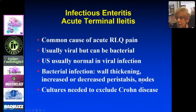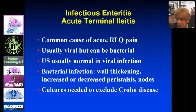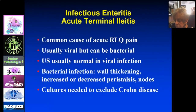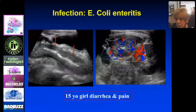Infectious enteritis is another cause of right lower quadrant pain. It can be viral or bacterial. Ultrasound is usually normal in viral infection. In bacterial infection, you may see wall thickening and nodes. You cannot exclude Crohn's disease from the imaging alone — they're going to need cultures.